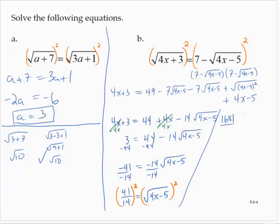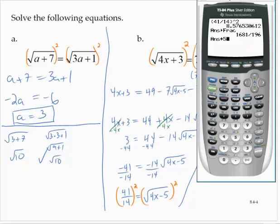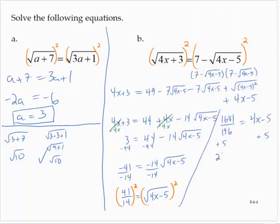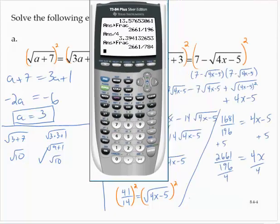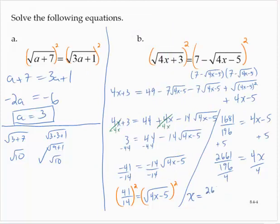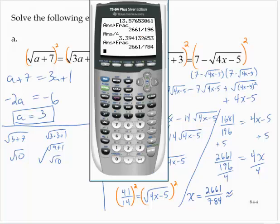So 1681 over 196 is equal to 4x minus 5. I would have to add 5 to both sides. All right, so let's add 5 to get 2661 over 196 is equal to 4x and divide by 4. So x is equal to 2661 over 784, which is approximately 3.394.